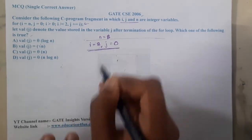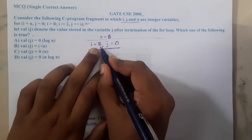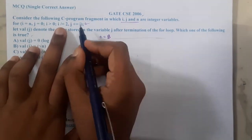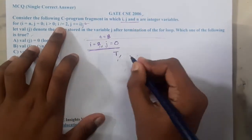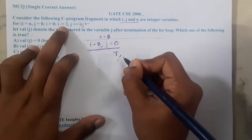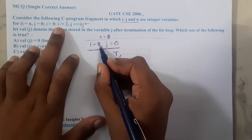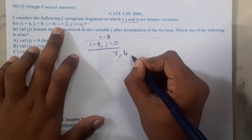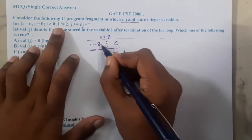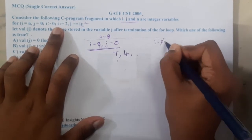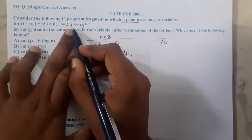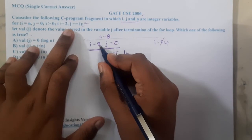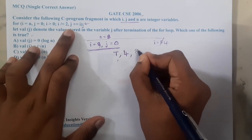Now we check the condition: is 8 greater than 0? True. You execute whatever is inside, but there is nothing inside because it ends with a semicolon. After this you do i equals i divided by 2, so 8 divided by 2 gives 4 — i is updated to 4. Then j equals j plus i, so j equals 0 plus 8... wait, let me reconsider.